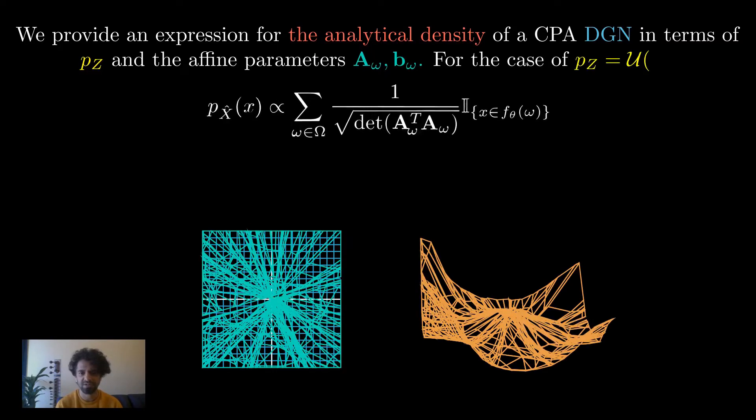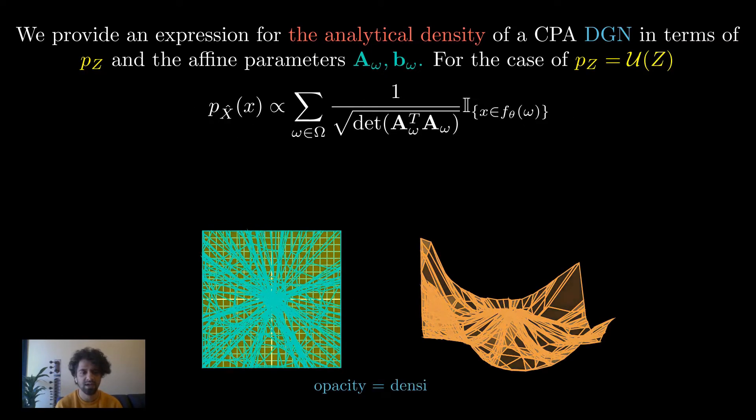For the setting we were just discussing with uniform p_z, the analytical density on the manifold can be expressed as inversely proportional to the square root of the determinant of the metric tensor per region.